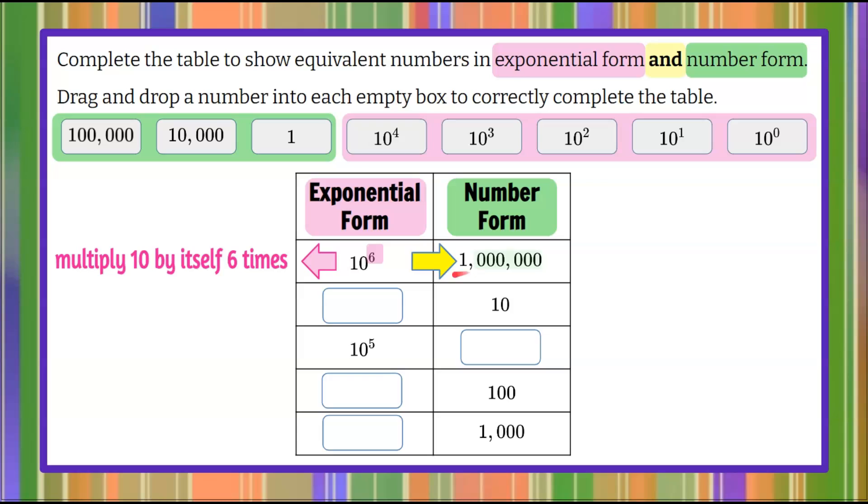So 1 million—six zeros, 1 million—that is the same as 10 to the 6th because it's 10 multiplied by itself six times, which ends up being 1 and six zeros when you're talking base 10. So 1 million is equivalent to the exponential form 10 to the 6th.